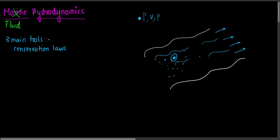After a certain period of time, this particle is somewhere else and the velocity of this particle at that new position is something different. So all these quantities will be a function of time — I can write this as rho(t), v(t), pressure(t). It's all a time-dependent variable.